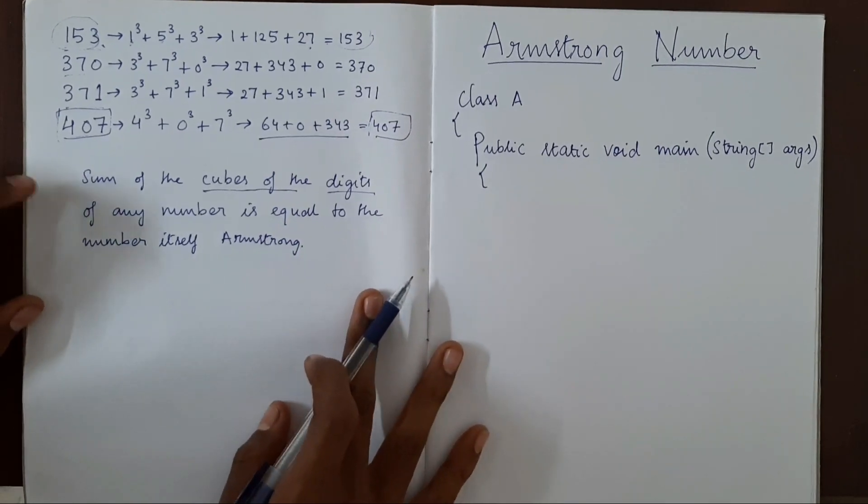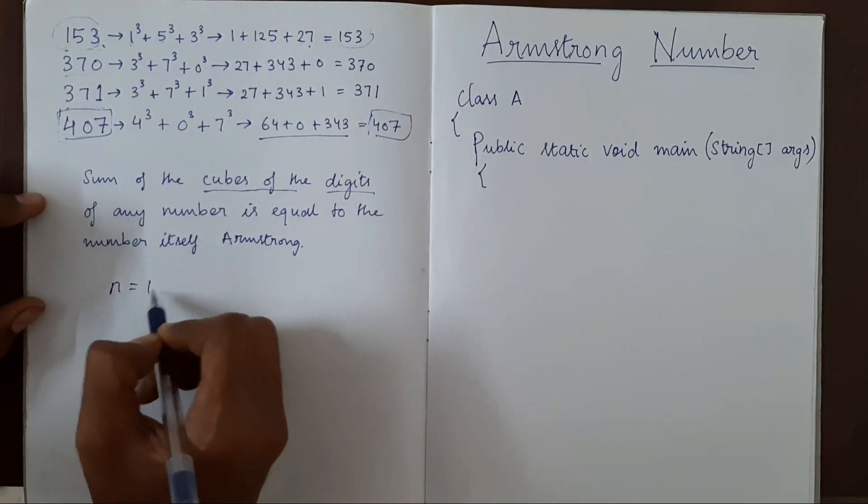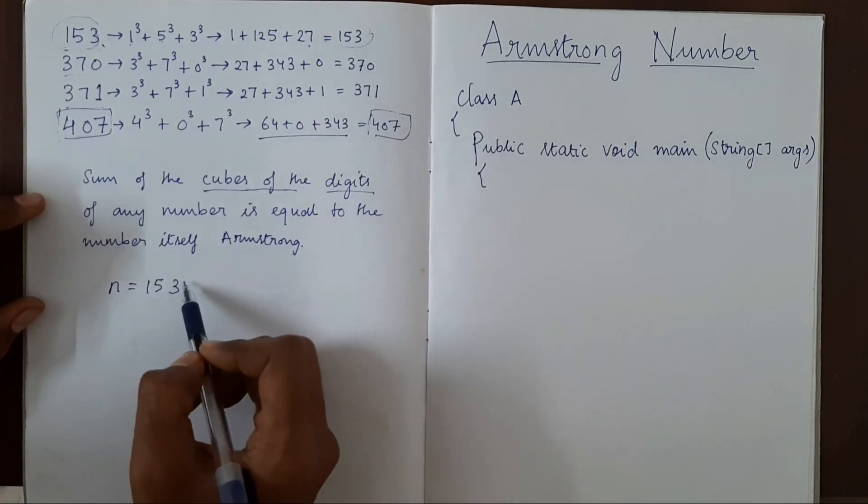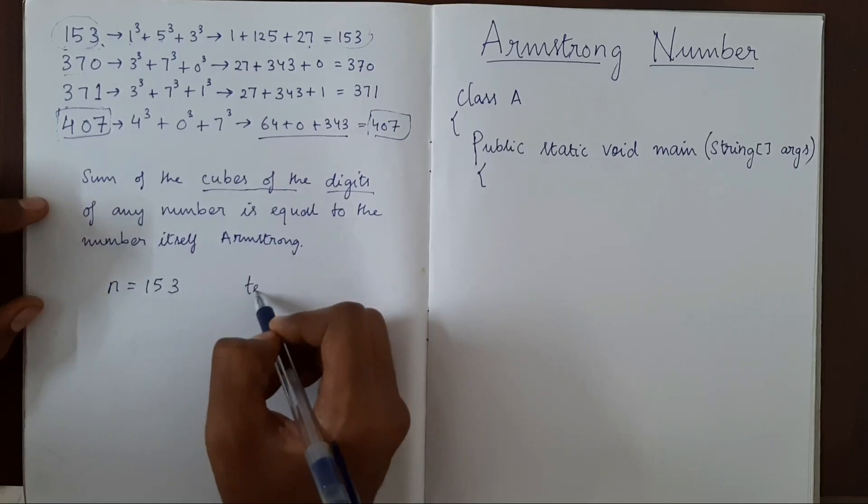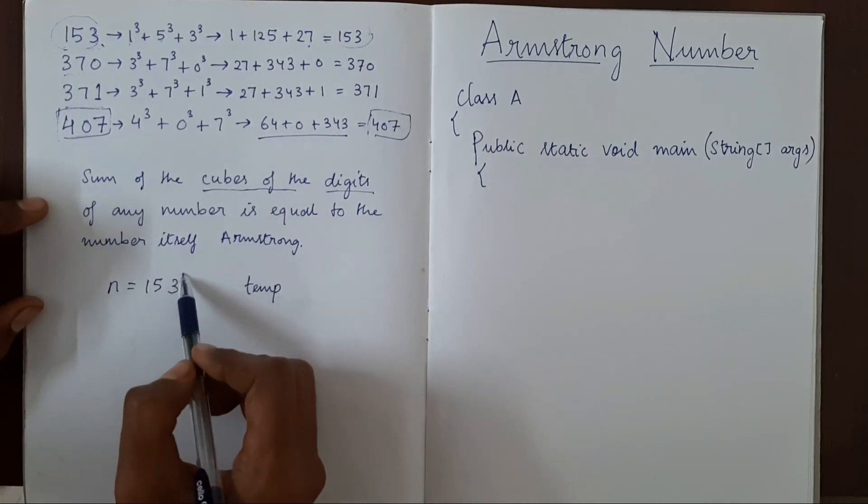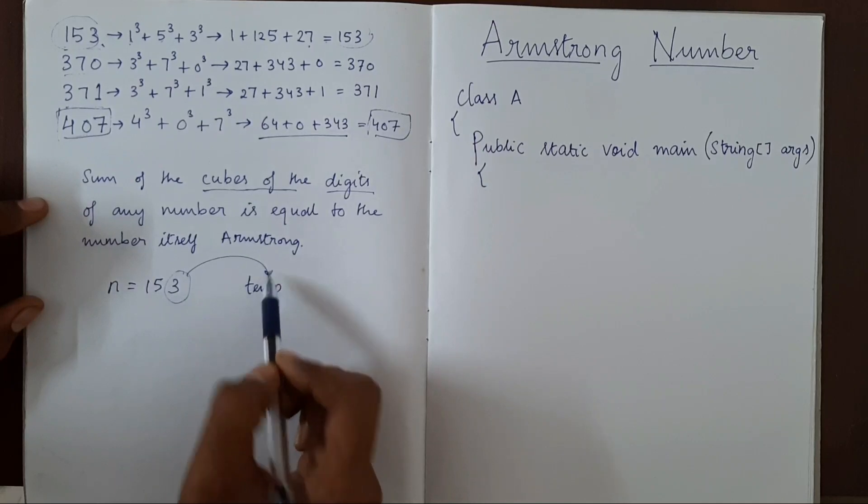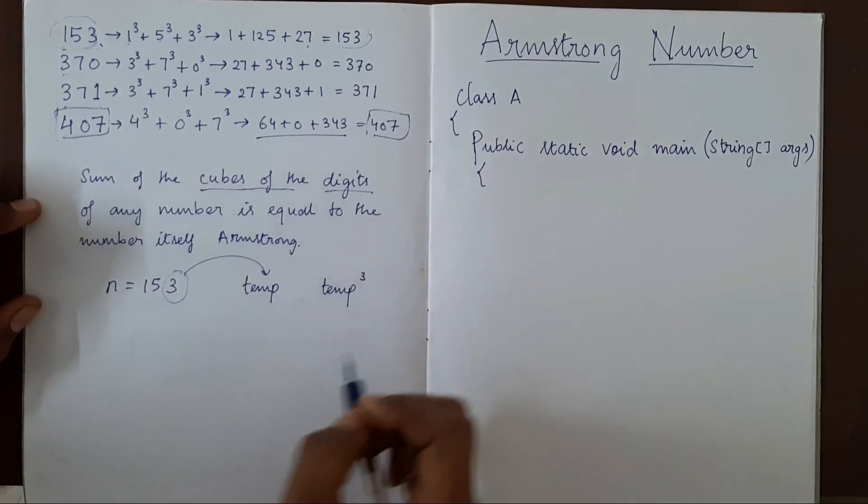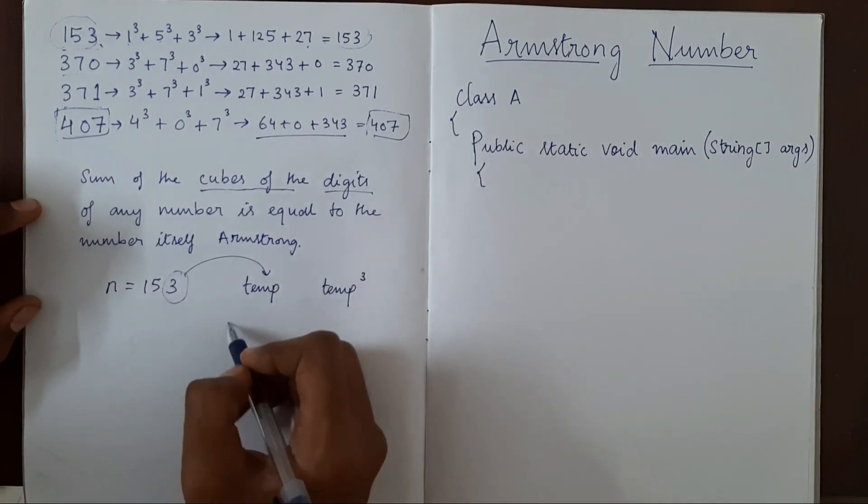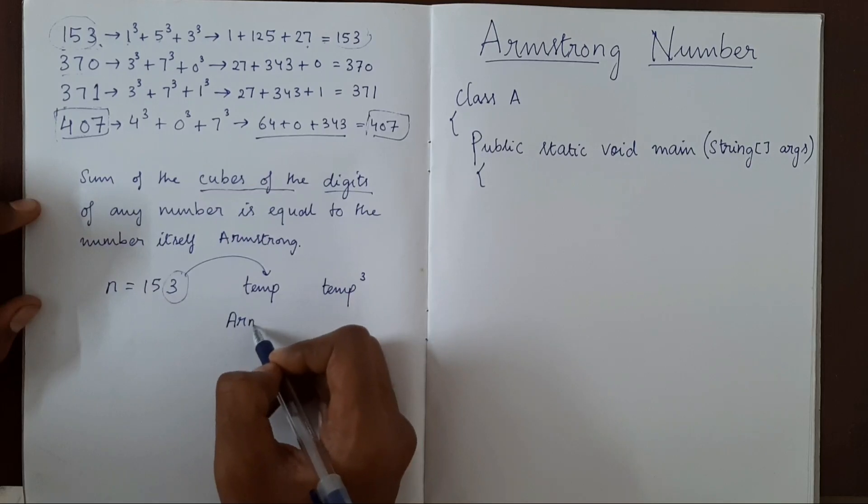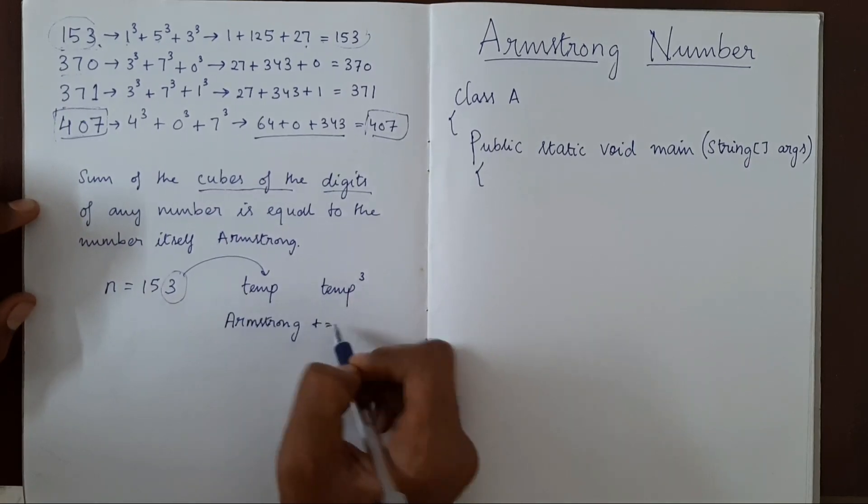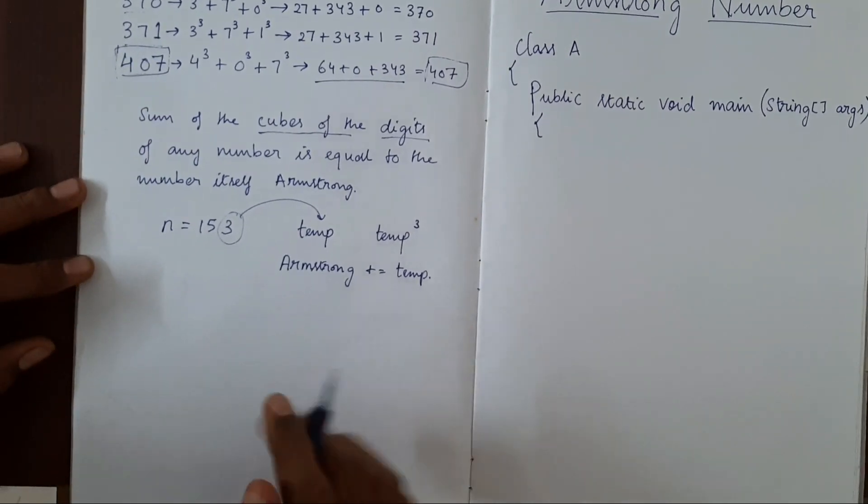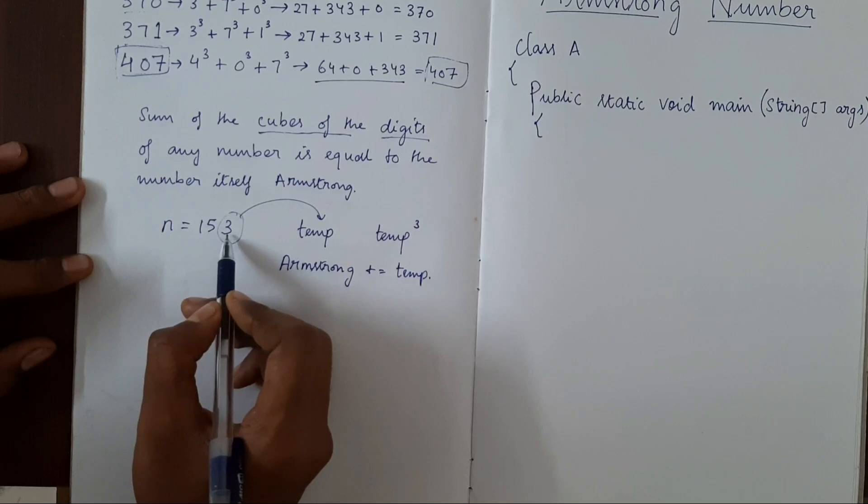So let's write a program. It's very simple. If we have n equal to 153, all we have to do is take one digit. We'll have one variable temp, take one digit in temp, then we'll cube that number, and then add it in another variable, let's call it Armstrong. Let me go a little bit in depth.